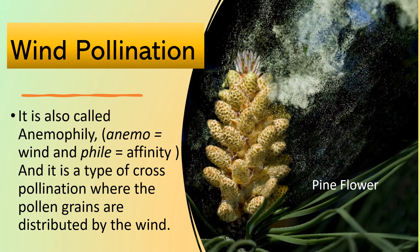Now let's look at wind pollination, also called anemophily, where 'anemo' means wind and 'phily' means affinity. It is a type of cross-pollination where the pollen grains are distributed by the wind.